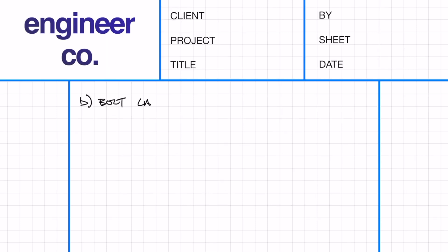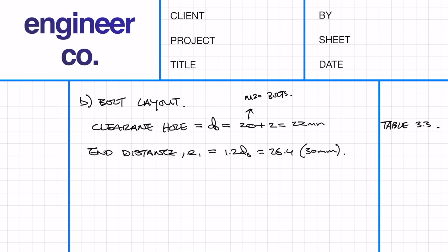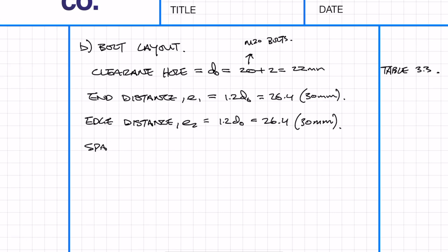Now we need to work out the bolt spacing or the layout. The first thing we need to do is work out what the clearance hole is. This is denoted by D0 and it's simply the bolt diameter plus 2, which is 22mm. Now we need to work out the minimum distances: the end distance E1, then the edge distance, then the vertical spacing and then the horizontal spacing.